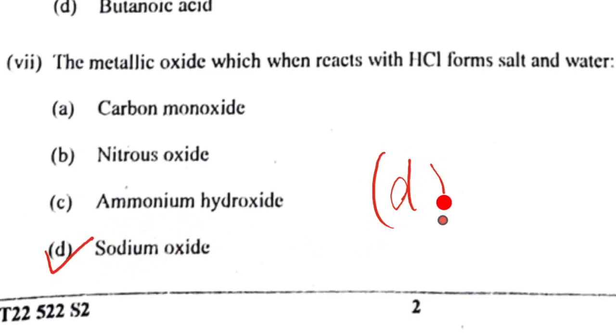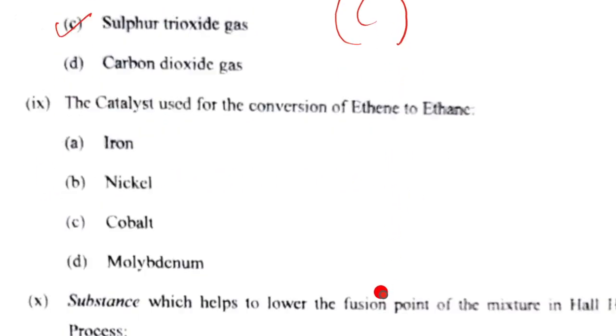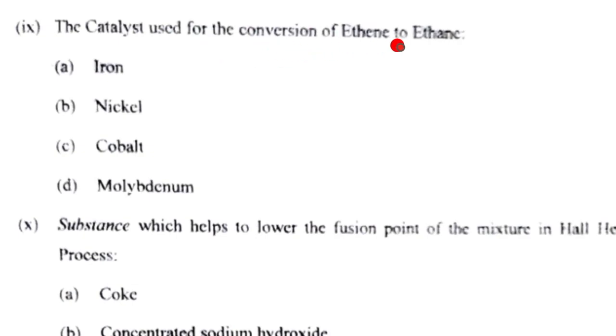Question 8: Vanadium pentoxide is used as a catalyst when SO2 becomes SO3 in the preparation of sulfur trioxide. The correct option is C. Question 9: The catalyst for converting ethene to ethane. Ethene's double bond becomes a single bond, meaning hydrogen has been added. This hydrogenation uses nickel catalyst at 300 degrees Celsius. The correct option is B.